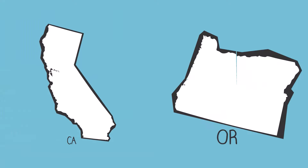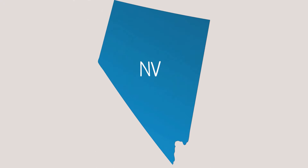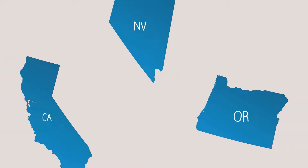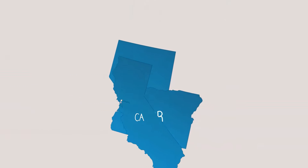These loyal states included California, Oregon, and after 1864, Nevada, all of which had joined the Union during the war. The war effectively ended on April 9, 1865.